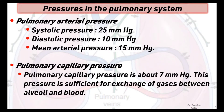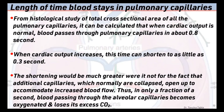Pulmonary arterial pressure: systolic pressure is about 25 mmHg, diastolic pressure is about 10 mmHg, and mean arterial pressure is about 15 mmHg. Pulmonary capillary pressure is about 7 mmHg, which is sufficient for the exchange of gases between the alveoli and blood.